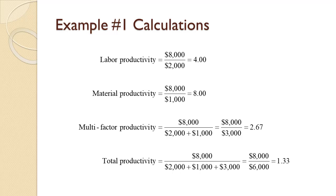Now, what do these numbers tell us? Each dollar of labor yields $4 of output. Each dollar of material yields $8 of output. Each dollar of variable cost, that is labor plus material in this example, yields $2.67 of output. Finally, each dollar of input yields $1.33 of output.